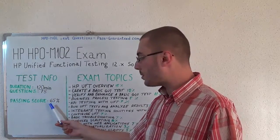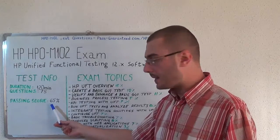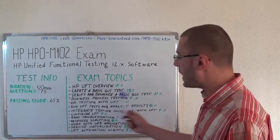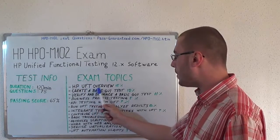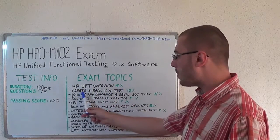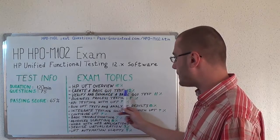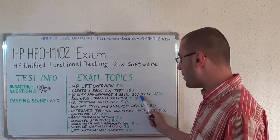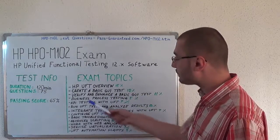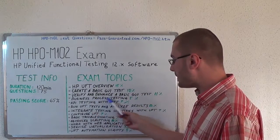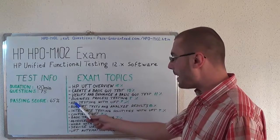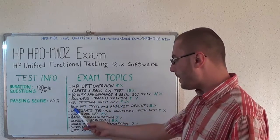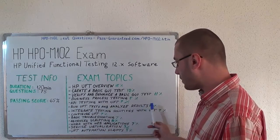Now let's move on to the exam topics. Firstly, we have HP UFT Overview with 15%, create a basic GUI test with 10%, verify and enhance a basic GUI test with 11%, business process testing with 5%, API testing with UFT 7%, run UFT tests and analyze results with 8%.